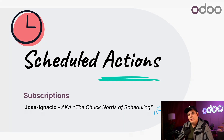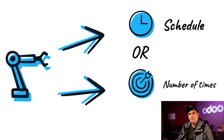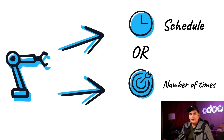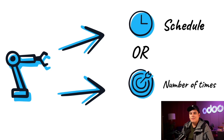Scheduled actions are custom processes that can be set up in your Odoo database to complete tasks automatically, according to a set schedule or a number of other repetitions. They are particularly powerful inside of the subscriptions app because subscriptions often require routine tasks to process.